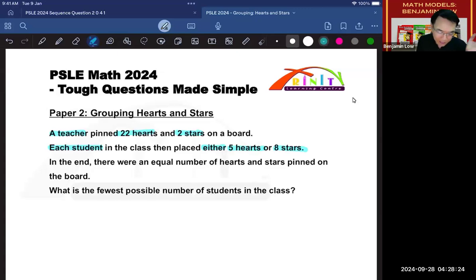Everybody comes up and does this, and in the end, there were an equal number of hearts and stars. The question is, what is the fewest possible number of students in this class? So how do we answer this?